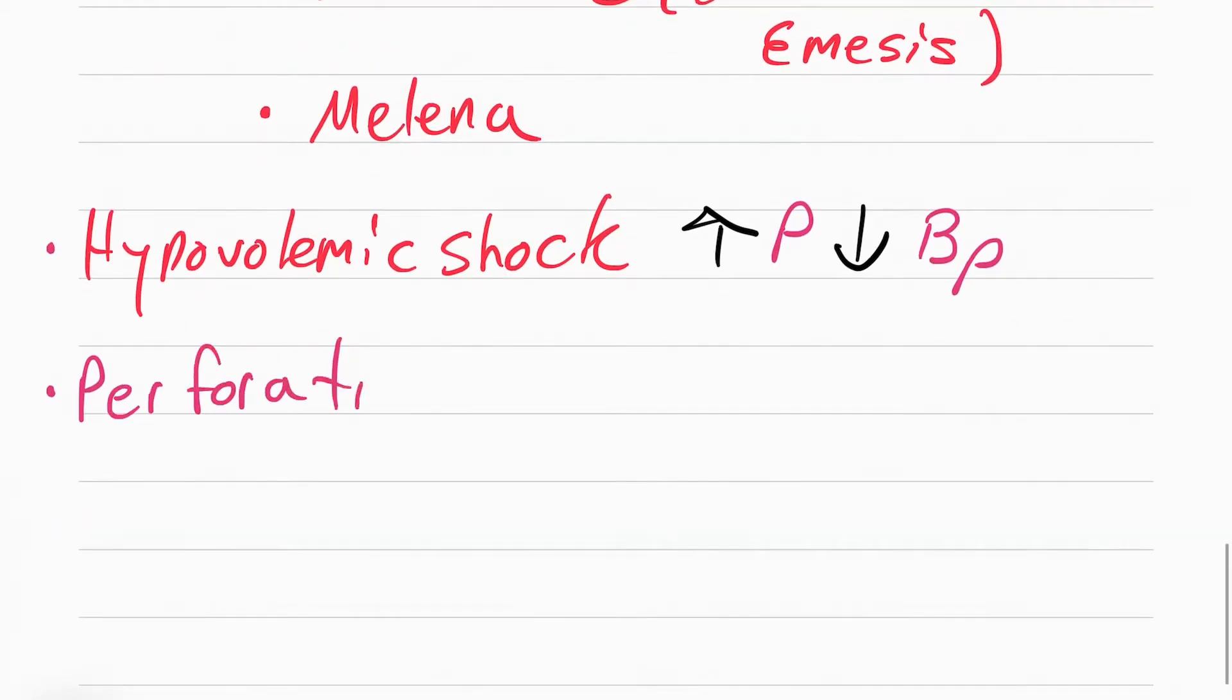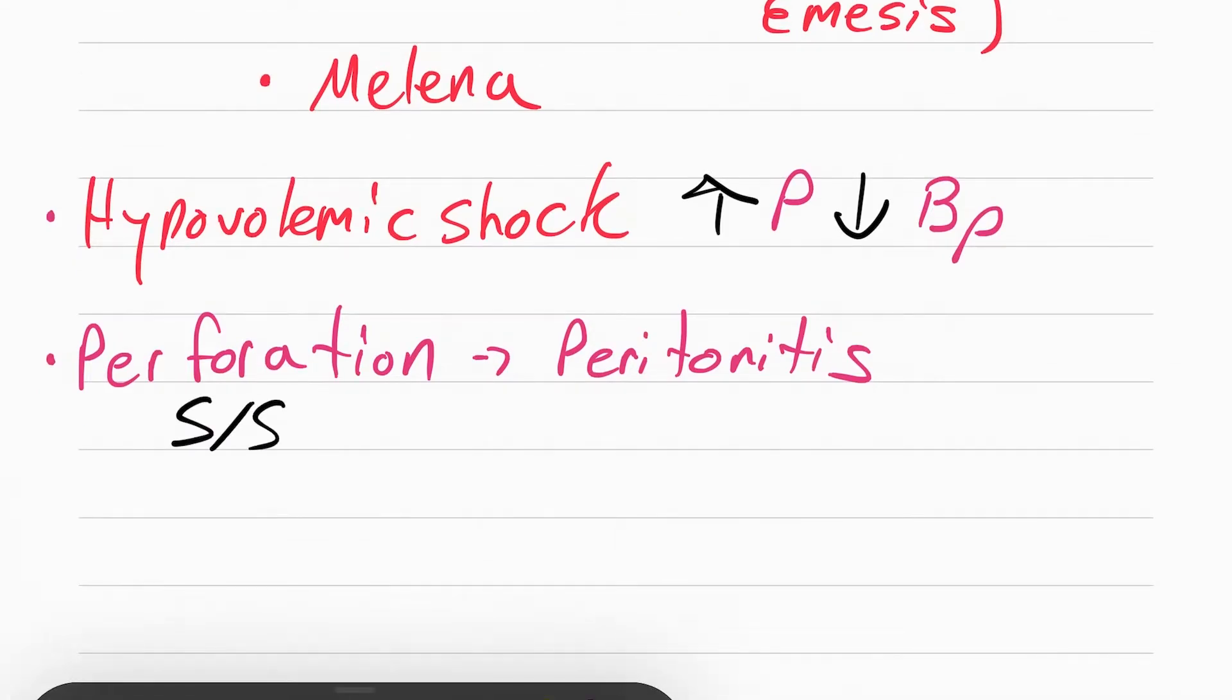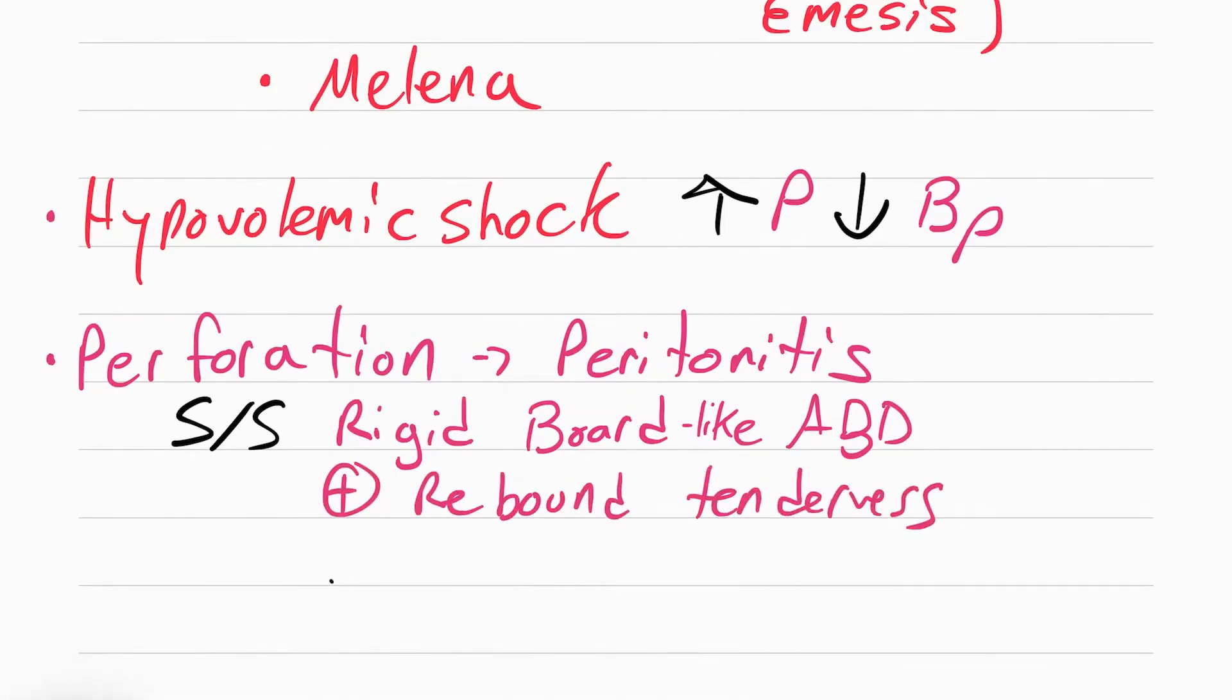The next complication is called perforation. This happens when the ulcer keeps being eroded away, starts to bleed, and then keeps eroding to the point where it perforates. All the contents in the GI tract will eventually end up in the peritoneal cavity. It's the sac that holds your guts. What will happen is this will cause peritonitis, which means inflammation of the peritoneal cavity. The patient will experience a rigid, board-like abdomen when you palpate it, positive rebound tenderness, abdominal distension and pain, and a fever.